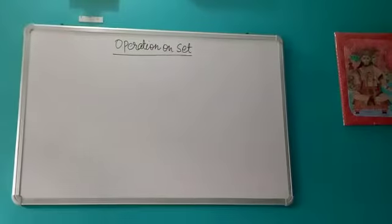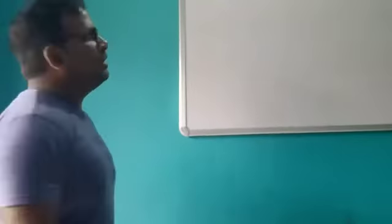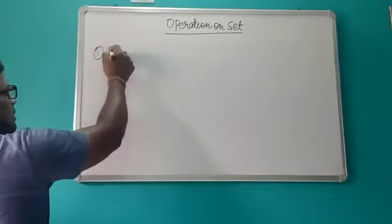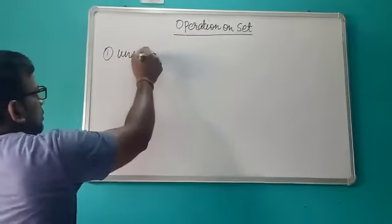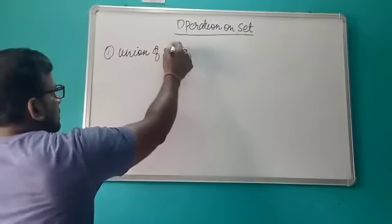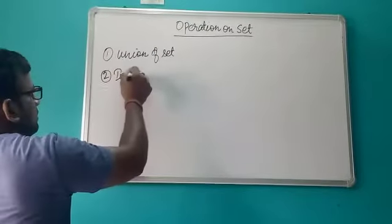Good morning students. So far we have started the sets and learned a few basic concepts. Now we will study the important topic of this chapter — operations on sets. There are two types of operations on sets: first is union of sets, and second is intersection of sets.